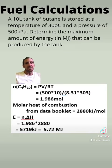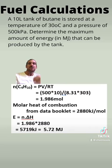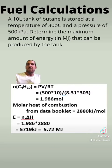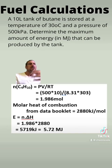Down below here you can see we need: number of moles of butane equals the pressure times volume divided by the gas constant times temperature. When we do that, we find the number of moles is 1.986, and then I use the data booklet value for molar heat of combustion to work out the energy.